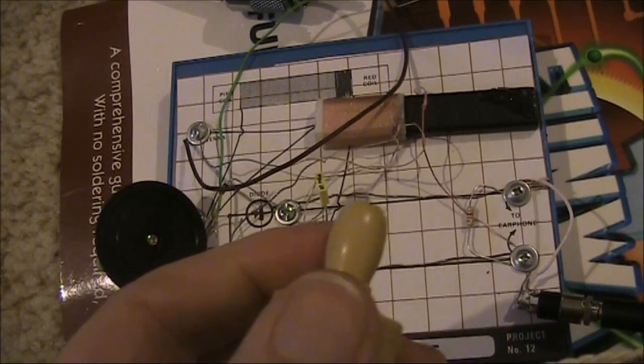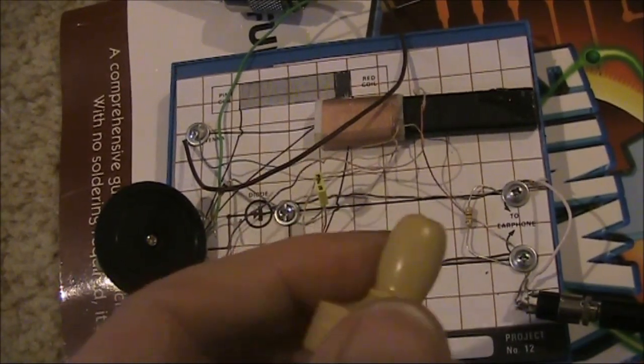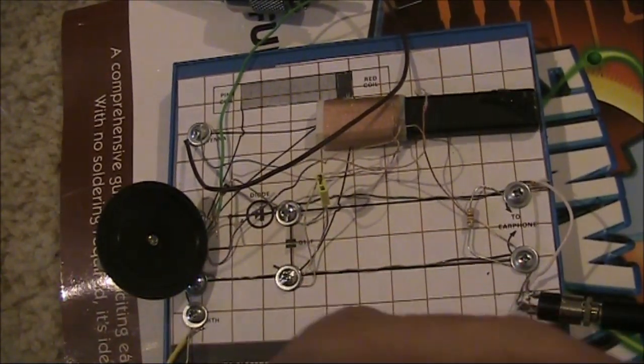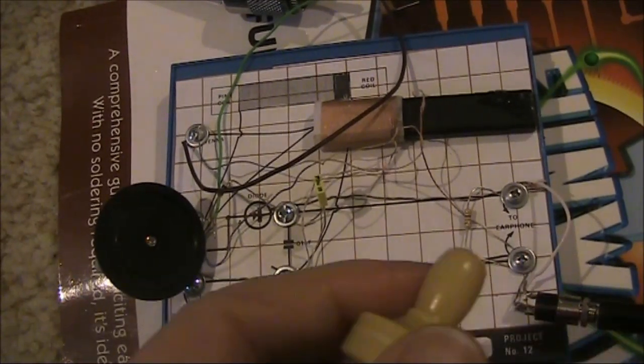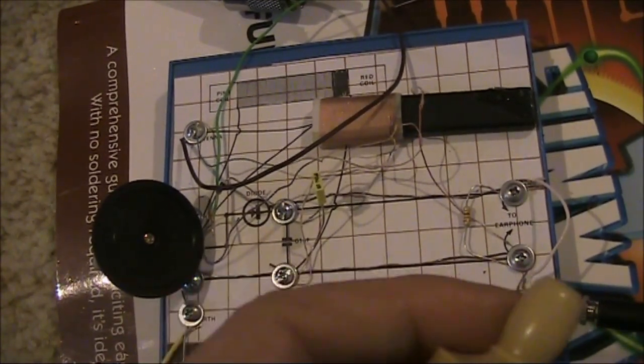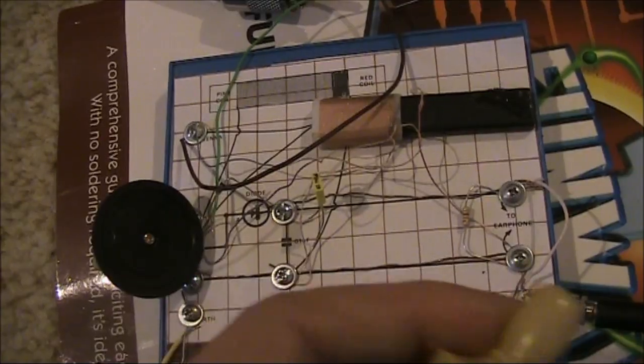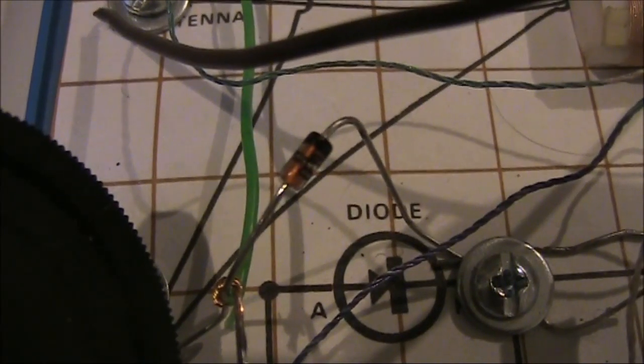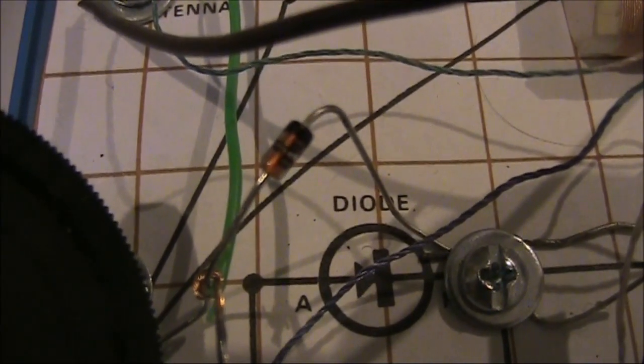But just for this video, to make it easier for you to hear it, I plugged the crystal set into the audio input of this digital camera. And as you heard, the audio levels were quite high. The diode being used for this was the 1N60 germanium diode.